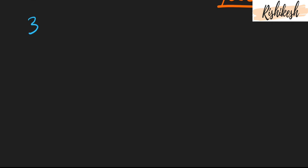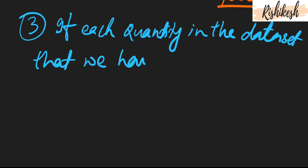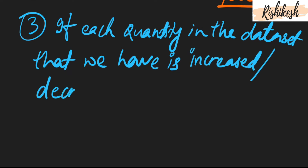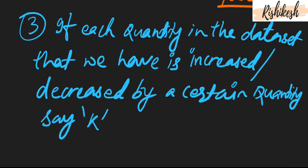Now we are going to talk about the third property. If each quantity inside the data set is increased or decreased by a certain quantity k, then the new average is also increased or decreased by k. So if each quantity in the data set is increased or decreased by k, then the average will also increase or decrease by k.